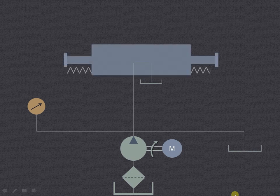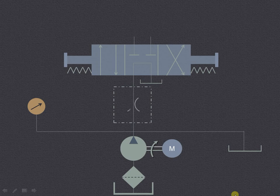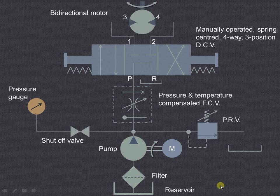As shown here, we have the various components used for this particular circuit. This is a reservoir, then a filter, a pump which is driven by the electric motor, then a shut-off valve, a pressure gauge, and a pressure relief valve.